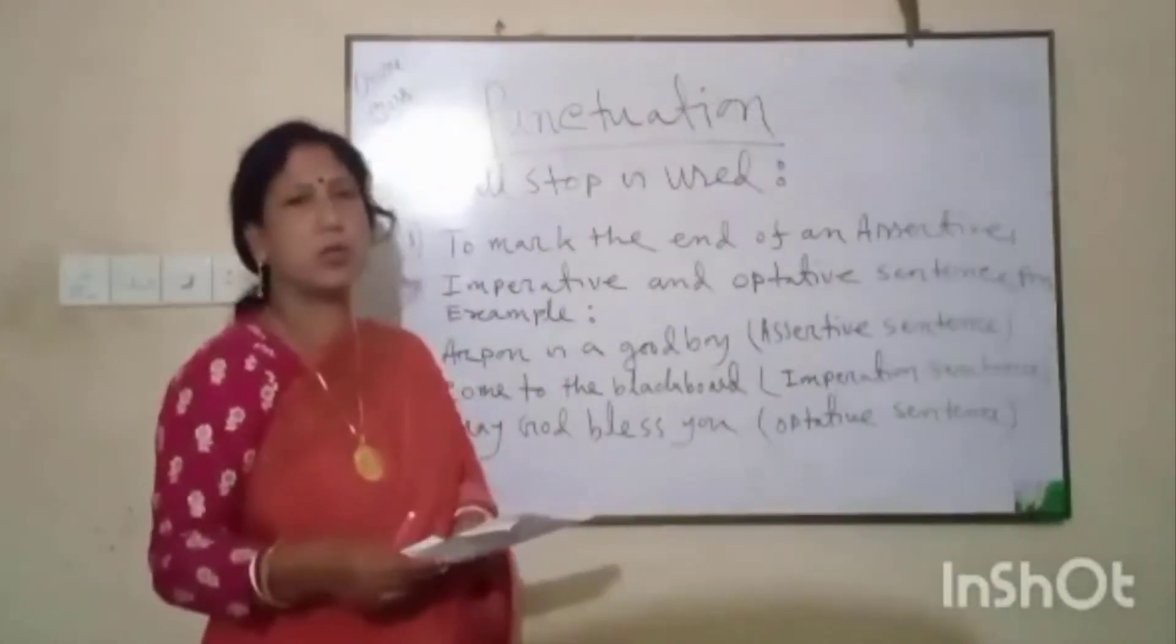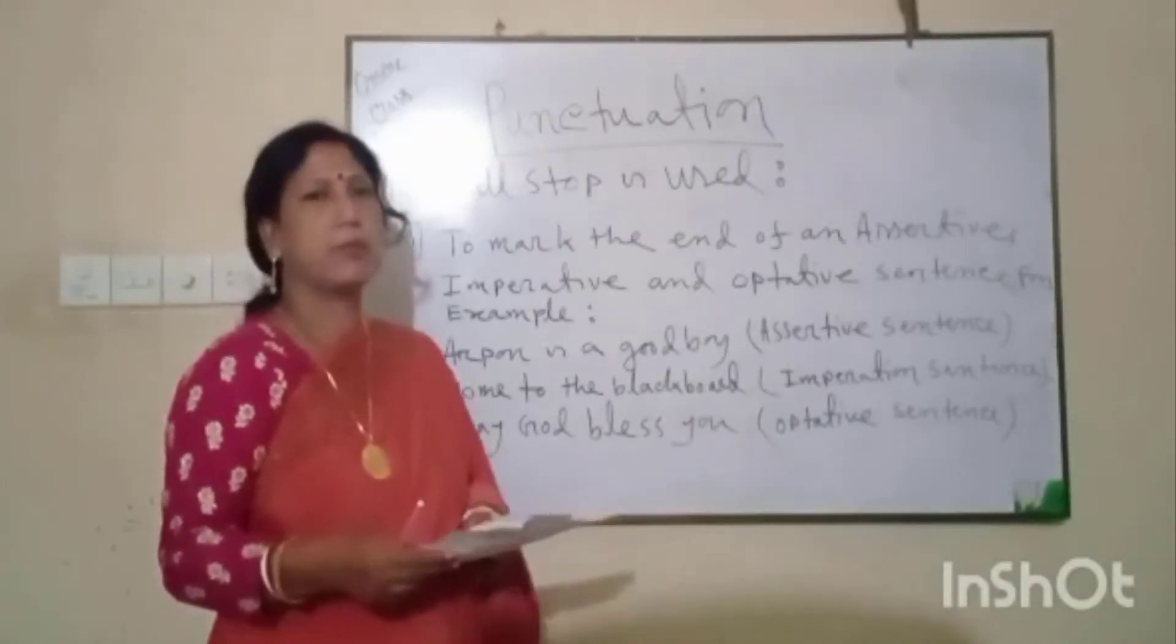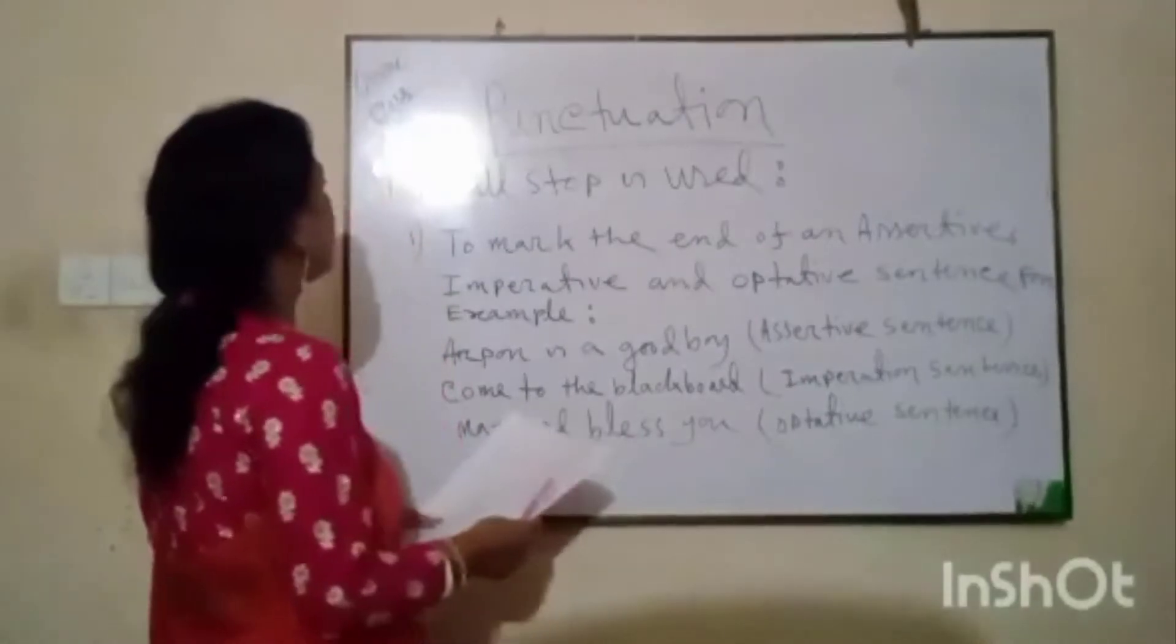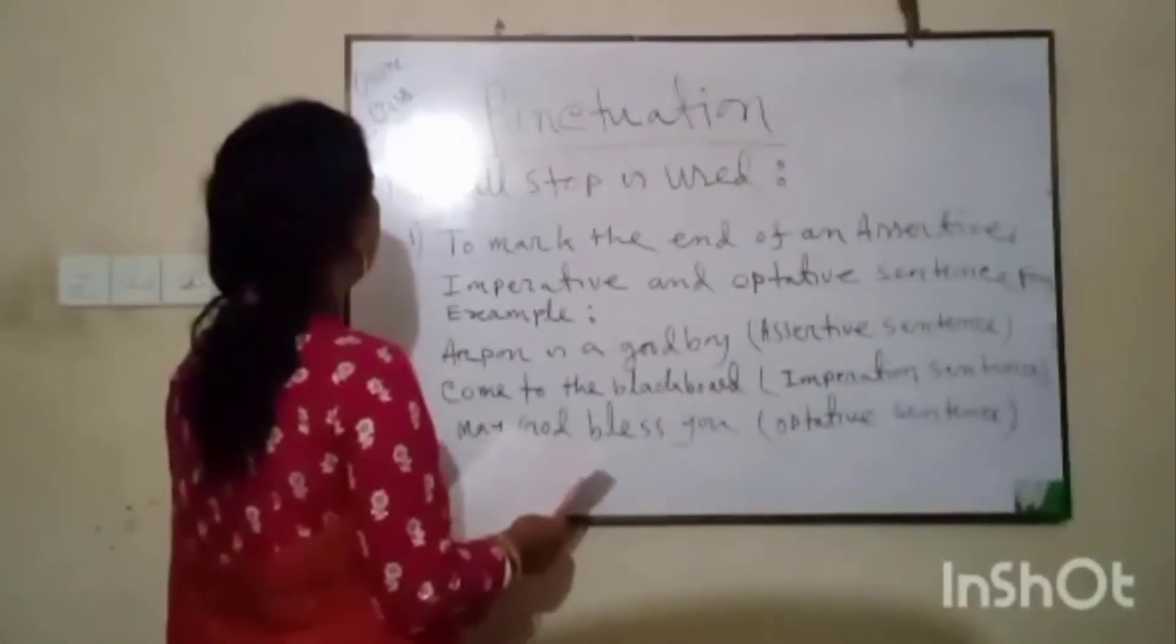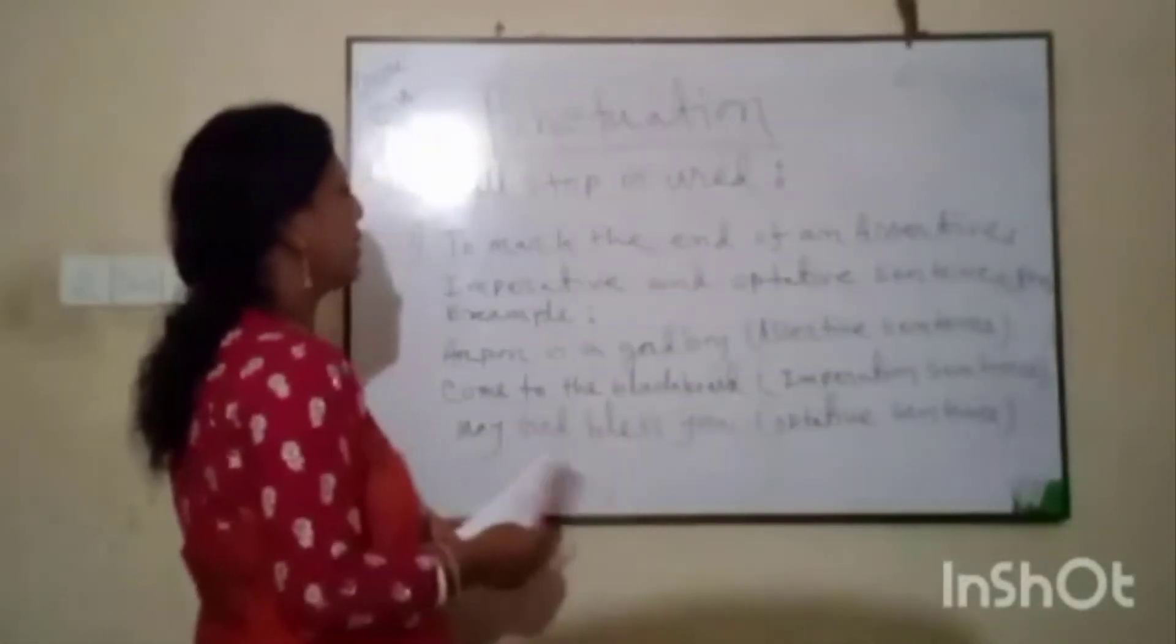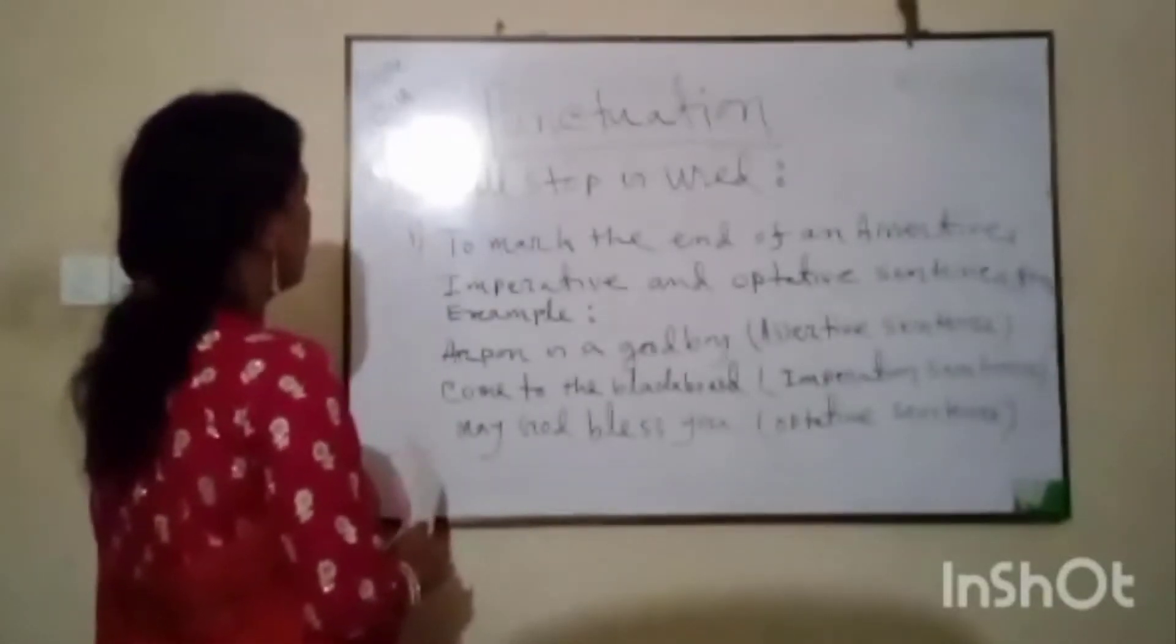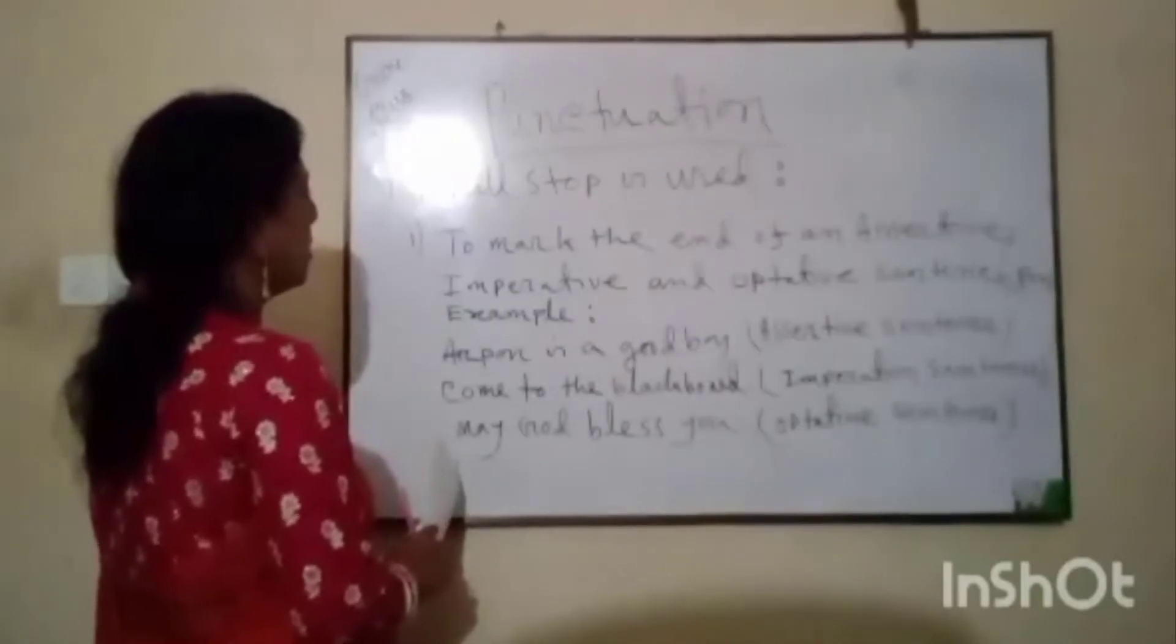Today I discuss only the full stop. A full stop is used, number one, to mark the end of an assertive sentence. For example, Orphan is a good boy. This is an assertive sentence.